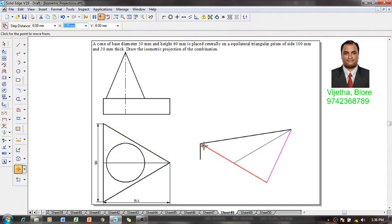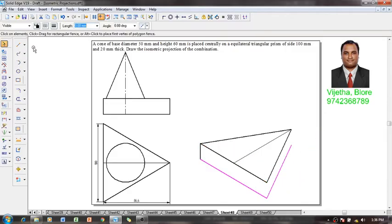Then we are going to position that visible edges slightly below the axis at a distance of 20 millimeter. Then using a line command, we are going to connect all the visible edges like this. Now one can say that the triangular prism is completed in all aspects.